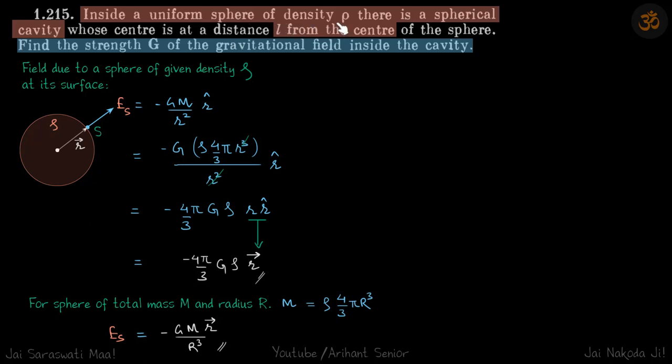We have a sphere of density rho and there is a cavity at a distance l from center. We need to find the field inside the cavity. Before we solve that problem, let's find a general solution of the field at a surface of a sphere of density rho.